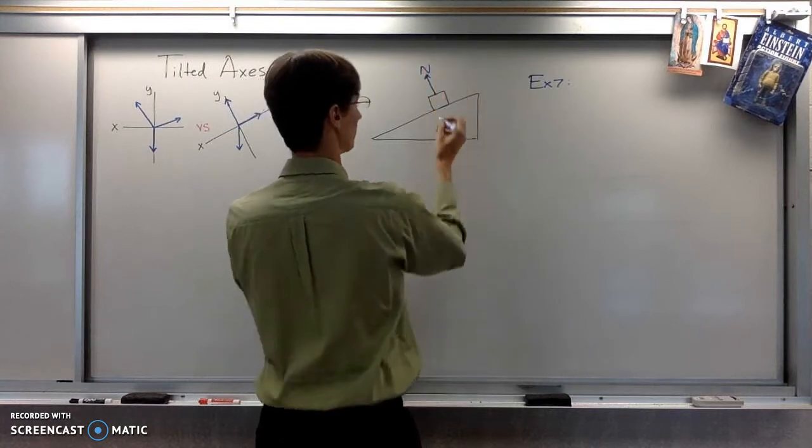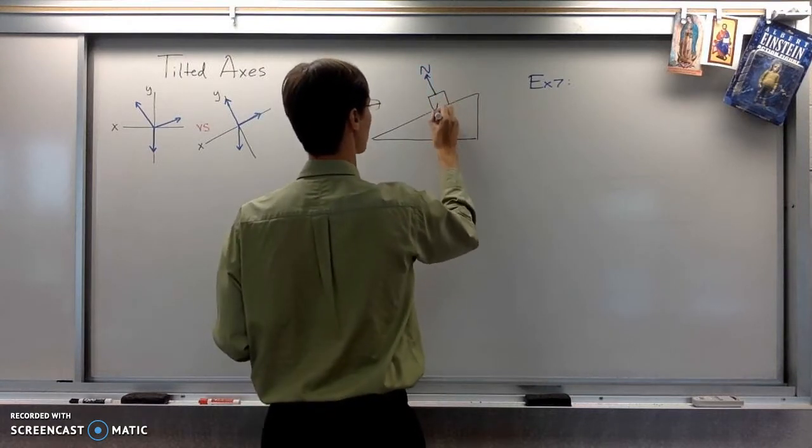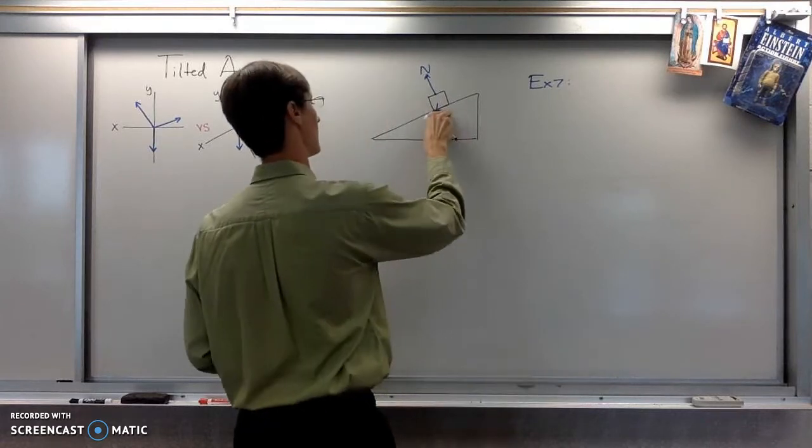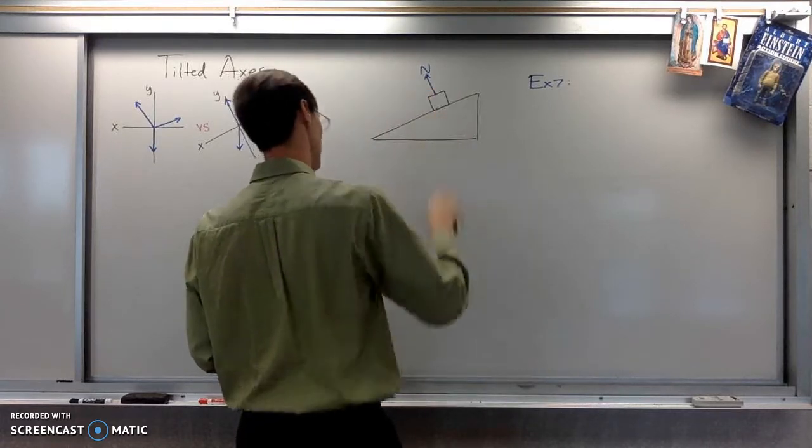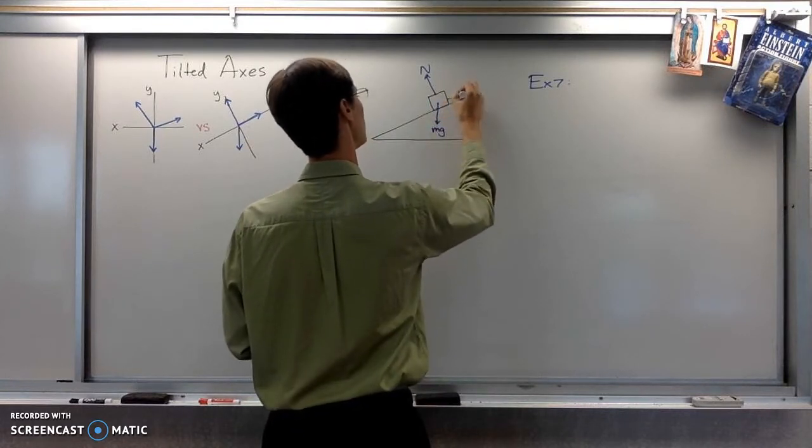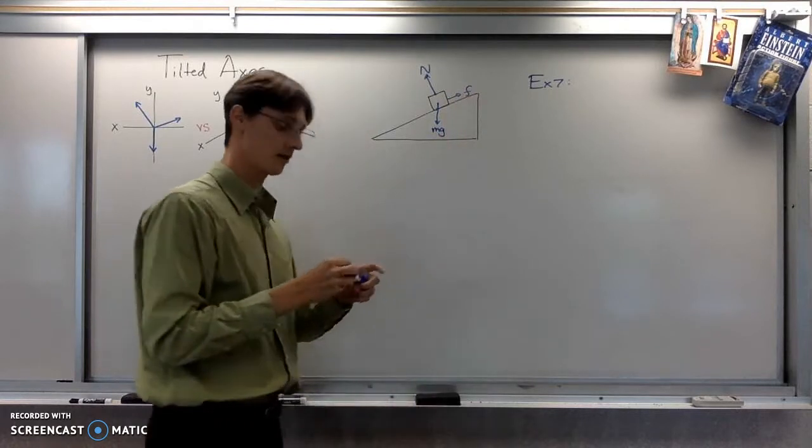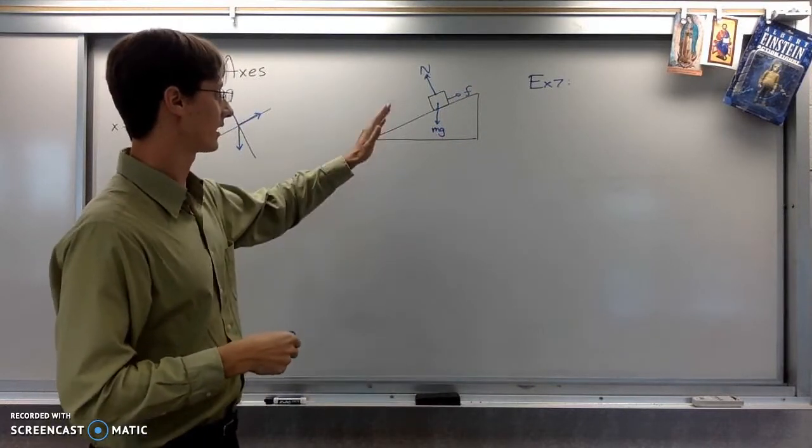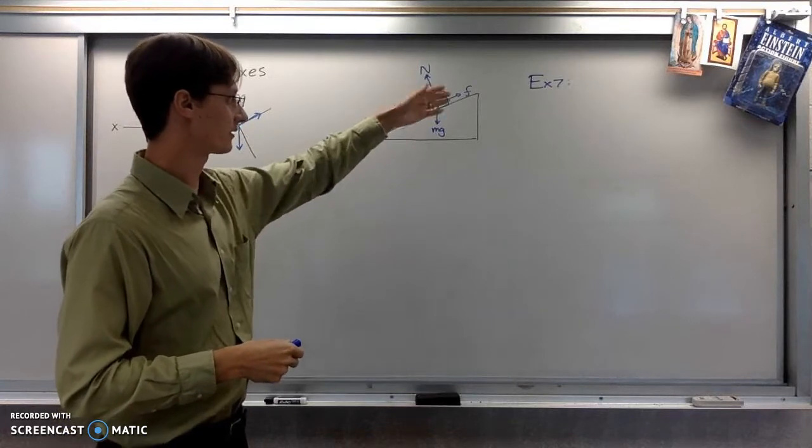All right, normal force perpendicular to the surface. Gravity straight down, that's straight down. I'll try that again. And then friction parallel to the surface, but pointing up because, after all, friction tries to oppose motion. All right, so we've got gravity straight down, normal force like that.